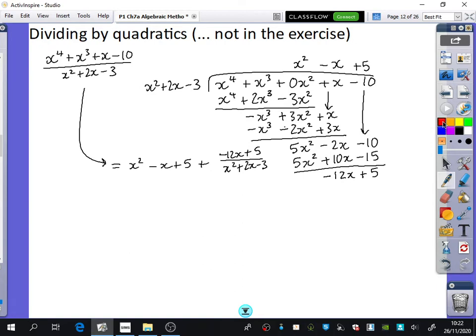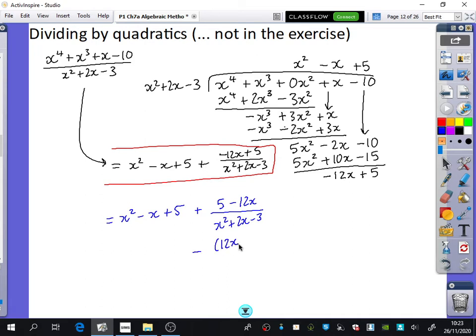You could write that in a number of different ways there. You could have written x squared minus x plus 5, plus something. You could bracket the top, or you could rewrite the order and do 5 minus 12x over x squared plus 2x minus 3, because then it kind of flows in the right kind of order as well. So does it feel that different? Not really. So this is the same thing that you'd be coming across if you were doing this in year 2 maths. So I'm not going to be setting you questions on this.